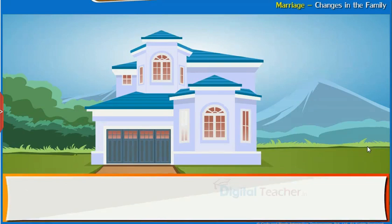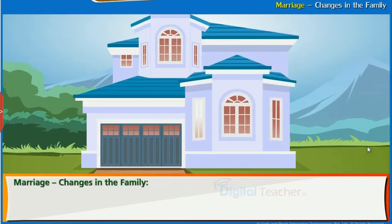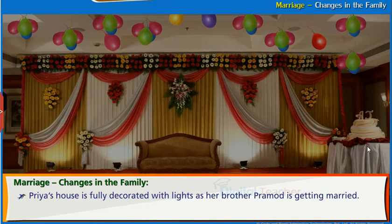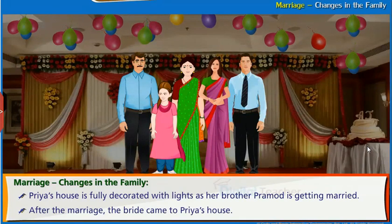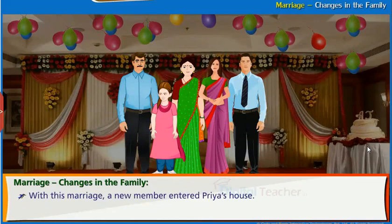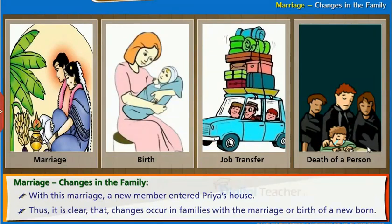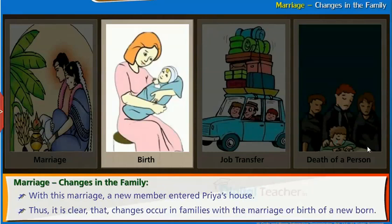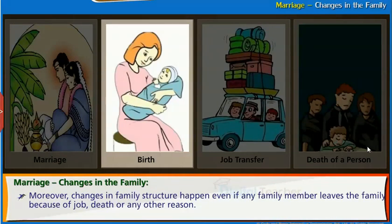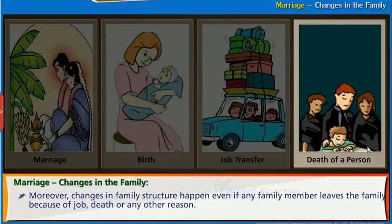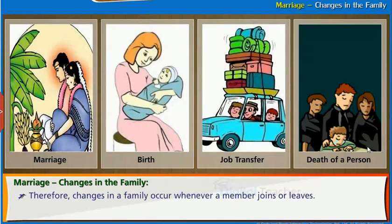Now it's time to know about the next most important reason for change in the family structure — it is marriage. Pria's house is fully decorated with lights as her brother Pramodh is getting married. After the marriage, the bride came to Pria's house. With this marriage, a new member entered Pria's house. Thus, changes occur in families with the marriage or birth of a newborn. Moreover, changes in family structure happen even if any family member leaves the family because of job, death, or any other reason. Therefore, changes in family occur whenever a member joins or leaves.